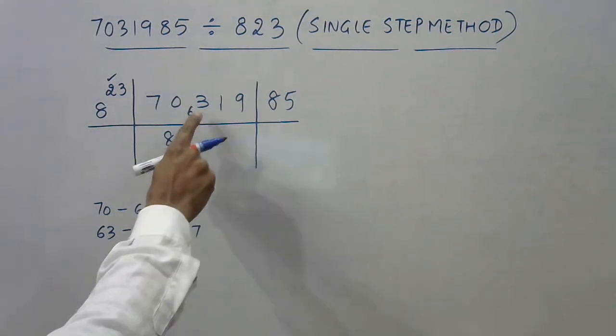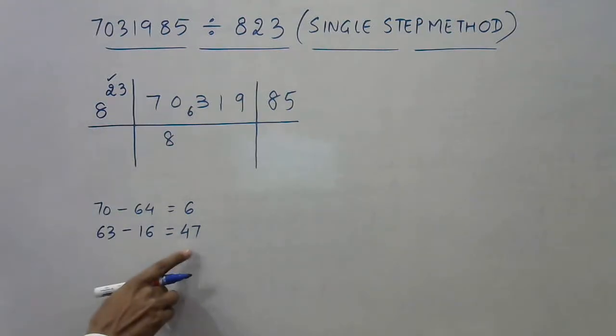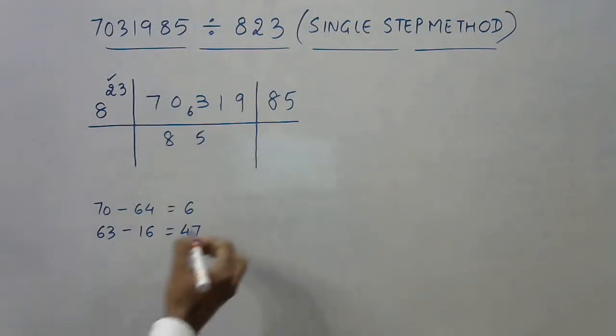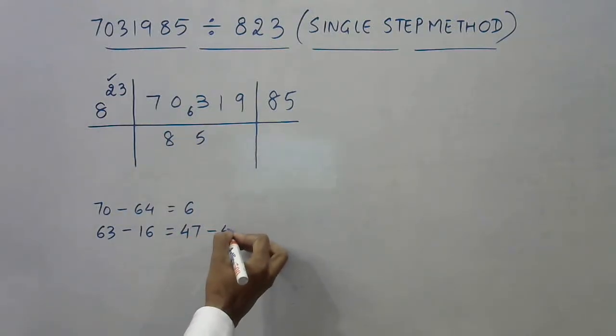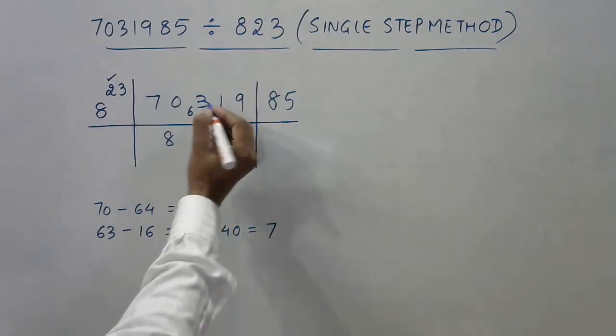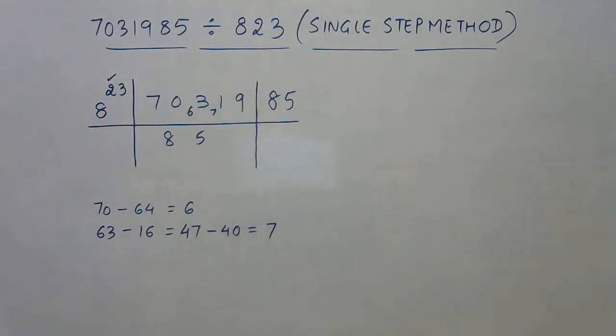I need to subtract 16 from this, giving me 47. Now the dividend has to be taken as 47 and not 63. 8 times 5 is 40, which gets me closer to 47. So 5 comes here as the quotient digit, and 8 times 5 is 40 subtracted from this, giving me the new digit 7. This remainder is written here, giving me 71 as the new dividend.